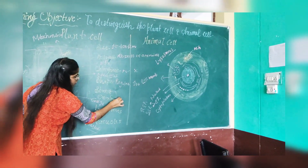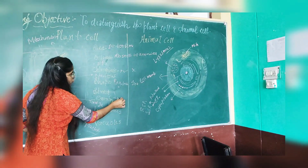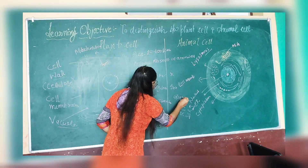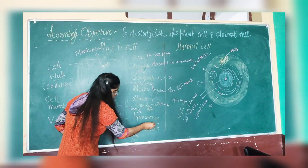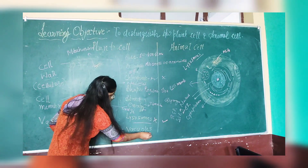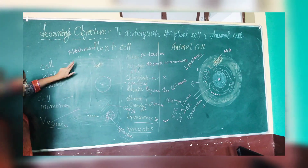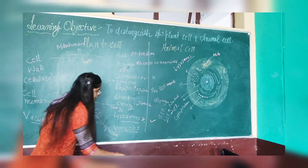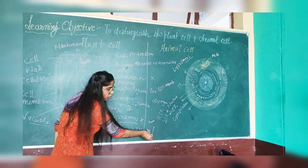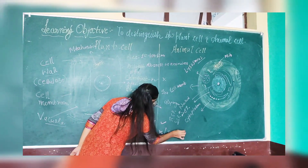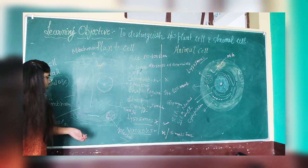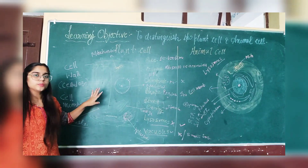Coming to the stored form of energy: in case of plant cells it is starch, and in case of animal cells it is glycogen. Lysosomes are absent in plant cells and present in animal cells. The vacuole is very large in size in plant cells, whereas in animal cells it is either absent or present in small size.